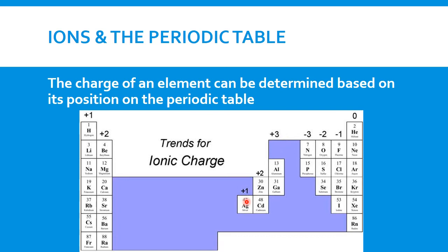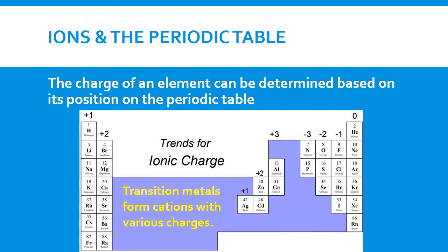Some specific elements: silver loses one electron, cadmium loses two electrons. The elements between the main groups are called transition metals. Transition metals form cations with various charges. They form cations because they are metals, and metals lose electrons. When they lose electrons, they end up with a positively charged ion — a cation.